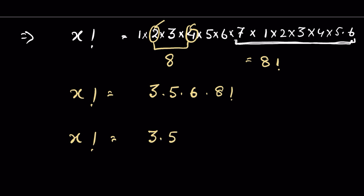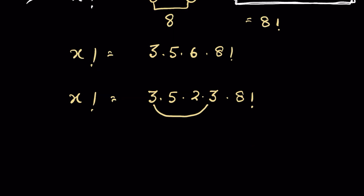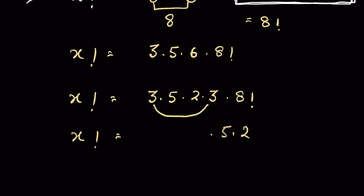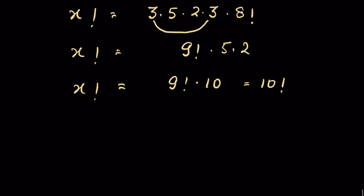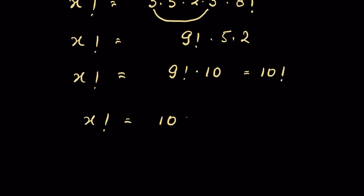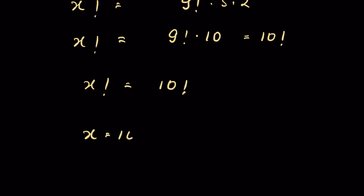We have 3 times 8 factorial. Since 3 times 3 is 9, we can write x factorial equals 9 times 8 factorial times 5 times 2. Now 9 times 8 factorial equals 9 factorial, so we can write it as 9 factorial times 5 times 2. Since 5 times 2 equals 10, x factorial is equal to 10 factorial.